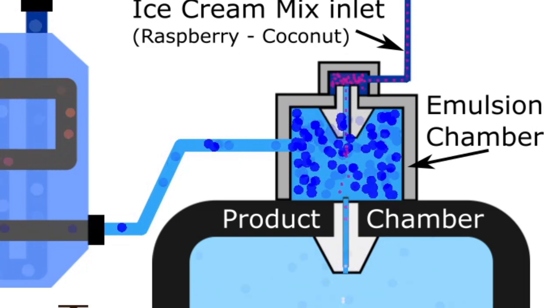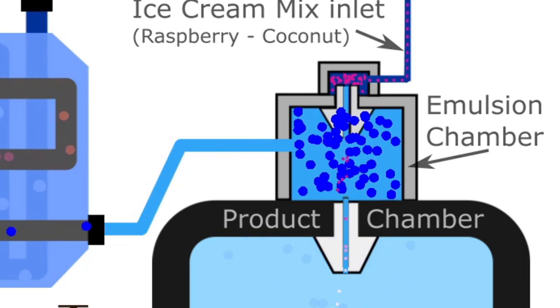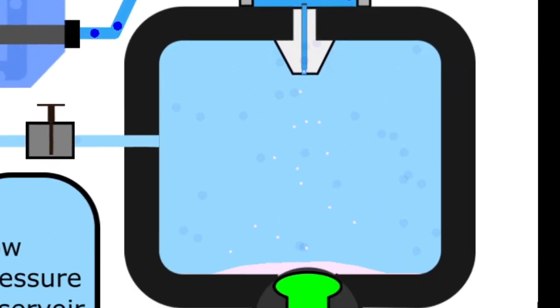The emulsion of liquid CO2 and ice cream mix is then forced through another nozzle into a fine mist inside a low pressure product chamber. Because of the low pressure inside this chamber, the liquid CO2 evaporates instantly, reducing its temperature and flash freezing the ice cream mix droplets.